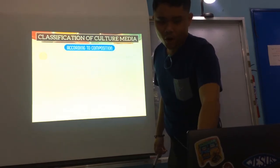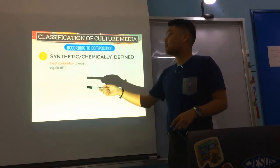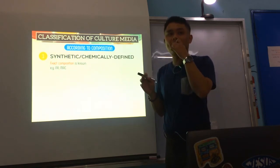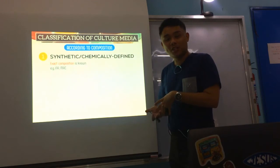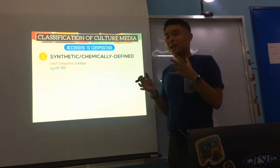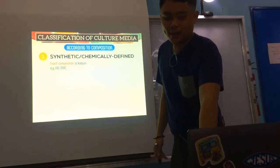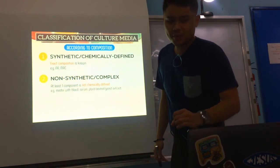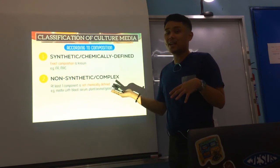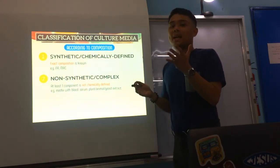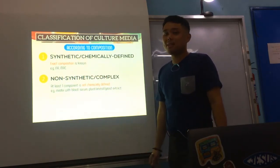Next, we go to composition. First is synthetic or chemically defined — the exact composition is known. A good example is nutrient agar (NA) and MacConkey (MAC), where you already know the pH indicators, inhibitors, and proteins like peptone and beef extract present. When we say non-synthetic or complex, these usually use biological materials like blood, serum, plant or animal extracts, or yeast extract, where you don't really know the exact composition.